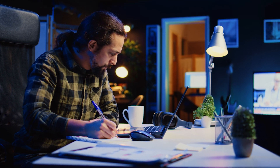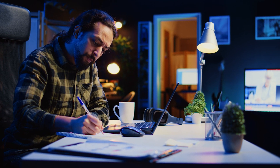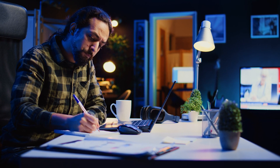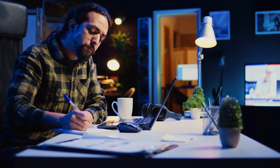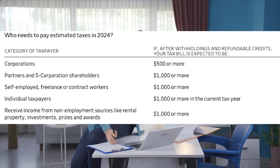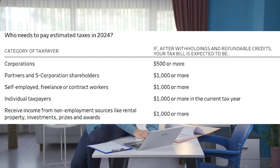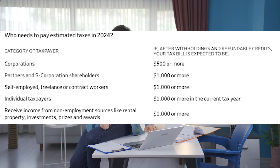Taxpayers who need to make estimated payments typically fall into four categories: corporations, the self-employed, those with substantial non-employment income, and individual taxpayers who expect to owe $1,000 or more. This diagram shows how much income each category needs to earn to be required to pay. For corporations it's $500; for self-employed, freelancers, and individuals with passive income it's $1,000. If your clients make more than $1,000, they probably need to make estimated tax payments.